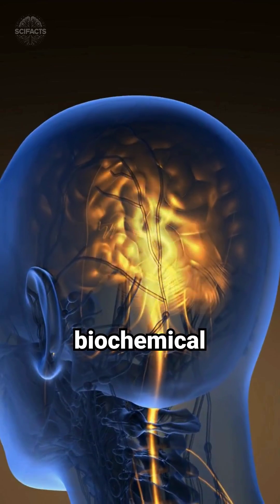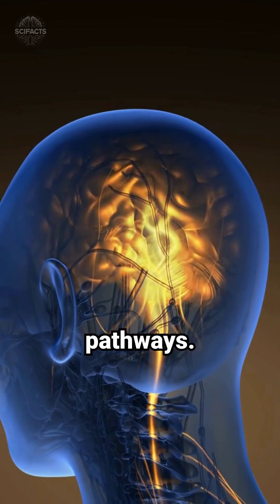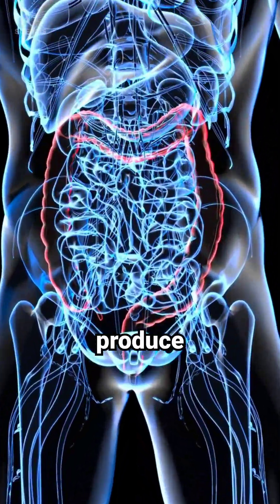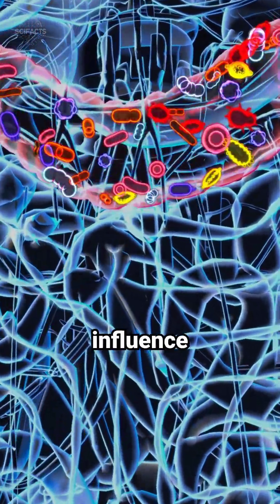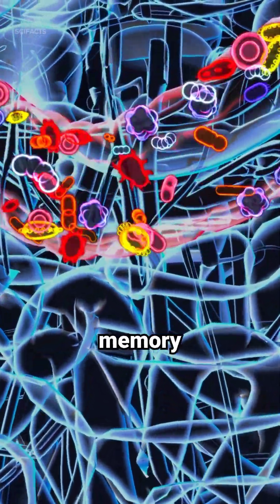Certain gut bacteria produce metabolites like short-chain fatty acids that influence neurotransmitters critical for memory and learning.